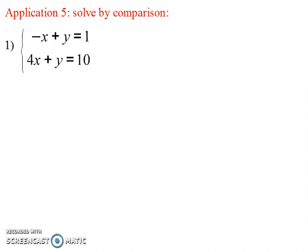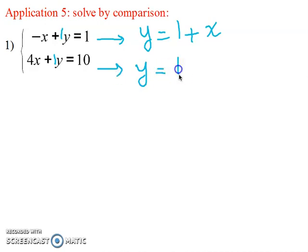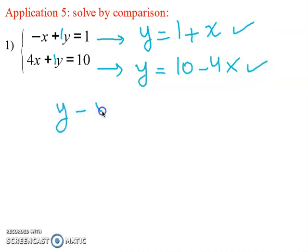We choose what is easiest for us. Here we notice that the coefficient of y is one in both equations, so it's easiest to isolate y. From the first equation we get y equal one plus x, and from the second equation y equal ten minus four x. Since these two y expressions represent the same quantity, y equals y, giving us: one plus x equal ten minus four x.